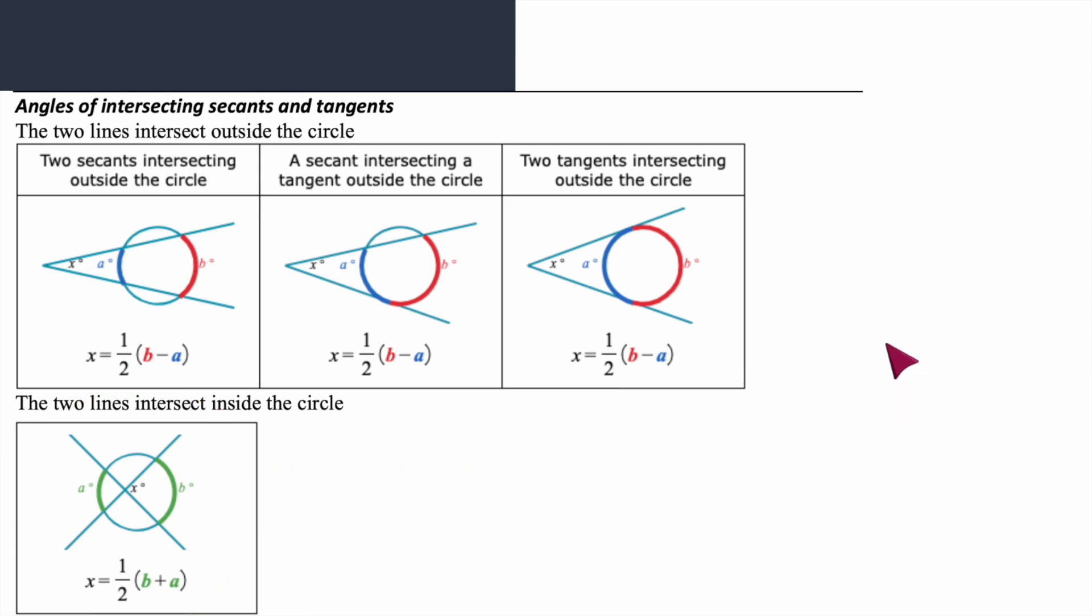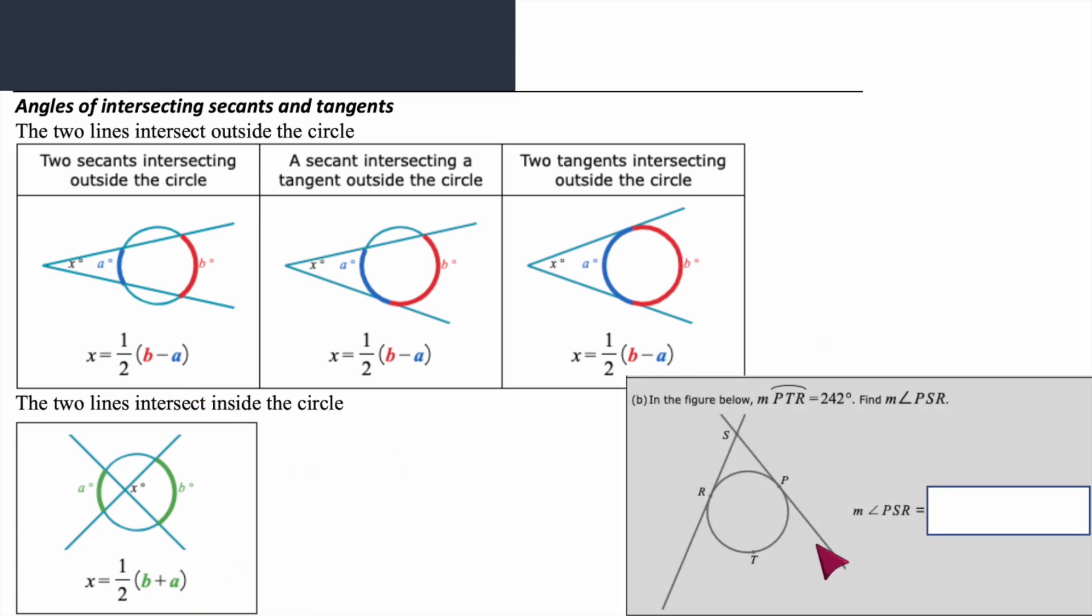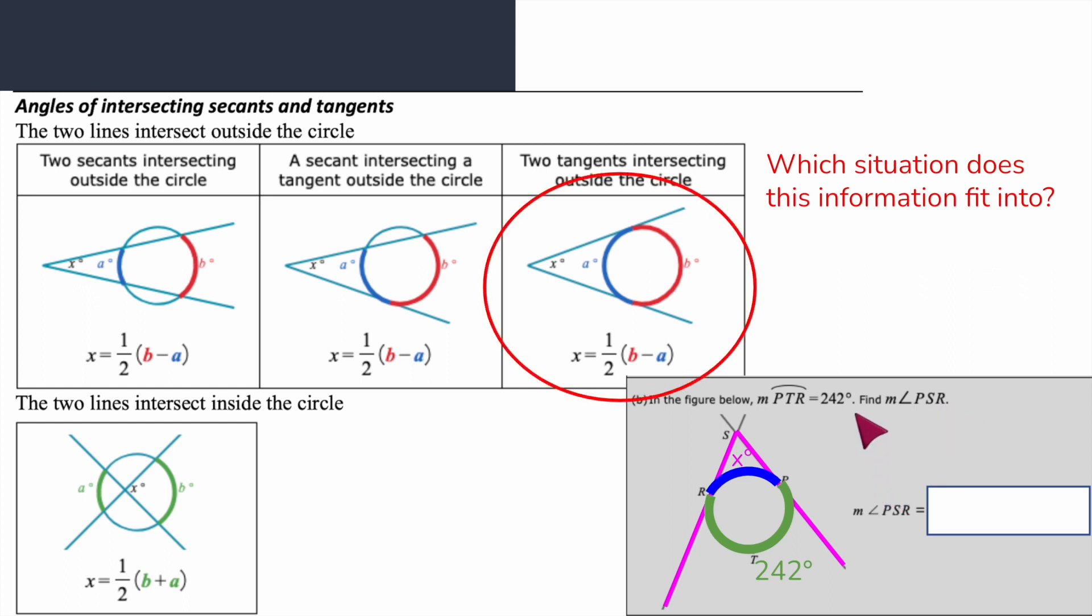Now we have this one. In the figure below, the measure of arc PTR is 242 degrees, and they want us to find the measure of PSR. They're only giving us one piece of information but I'm going to show you why they're giving us more. This fits the situation where lines are intersecting outside the circle. It doesn't matter which of the three cases because you use the same formula for all three. You just need to know that when they're intersecting outside the circle, you're going to subtract the arcs.